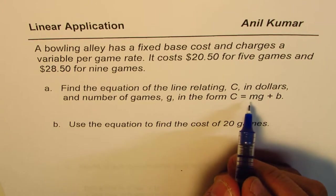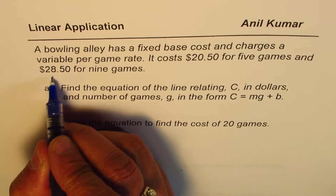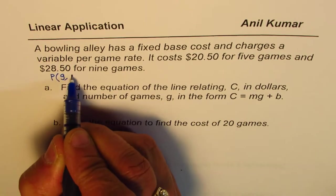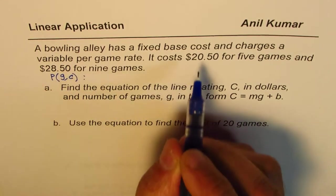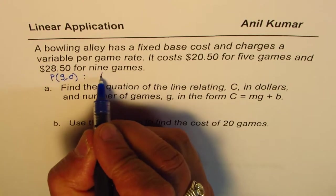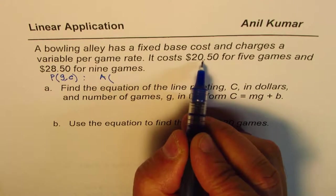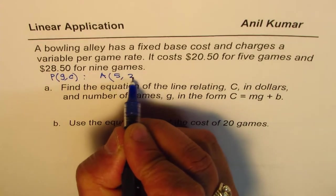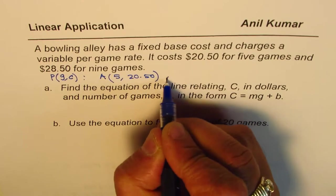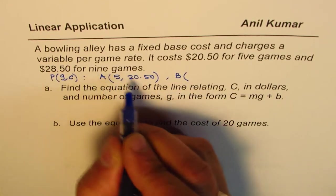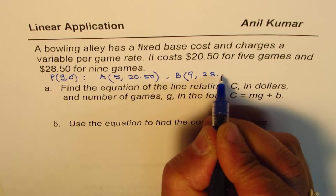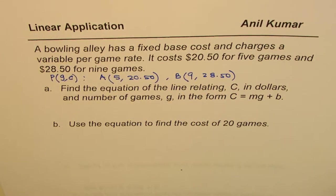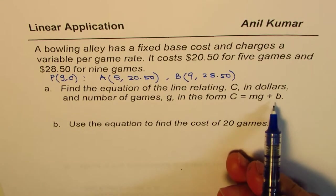Every coordinate point here could be represented in the terms of, let's say, a point P could be written in terms of number of games and the cost. So, based on this, we have two coordinate points. Let's say, A is cost is $20.50 for 5 games. So, for 5 games, it is 20.50. And let's say the other point is, for 9 games, the cost is 28.50. So, we get two points on a line, and that will help us to find slope and y intercept.